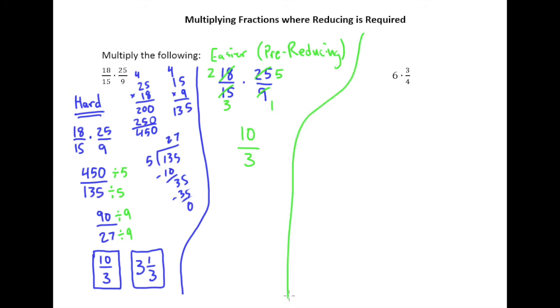We have 6 times 3 fourths. So 6 times 3 fourths. Let's remember our trick. We've done this a little bit with addition and subtraction. If you see a whole number that you need to add, subtract, multiply, whatever to a fraction, go ahead and take that whole number and put it over 1. So this becomes 6 over 1 times 3 fourths.